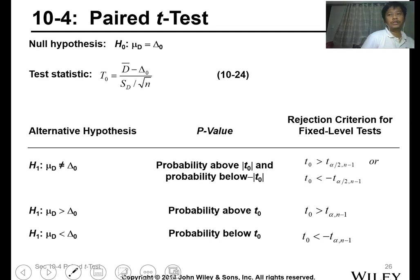Now we'll proceed to the next lesson, still lesson 9 from chapter 10, on the paired t-test. For the paired t-test, the null hypothesis is that the difference in mean of your paired sample data is equal to your null value. The test statistic is still the t-test if you don't know the variance of the population.